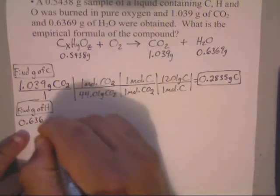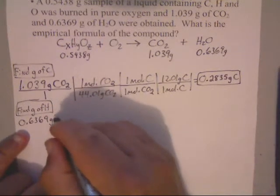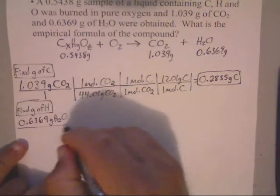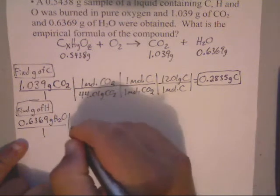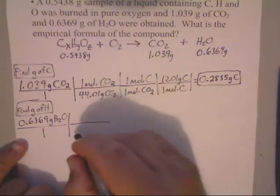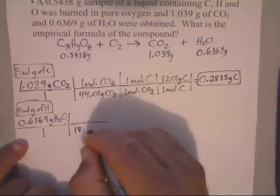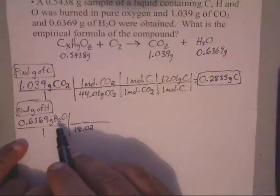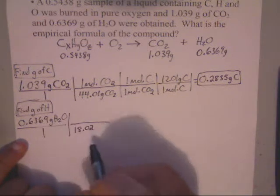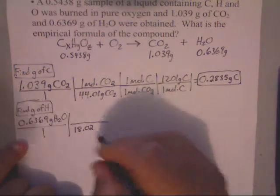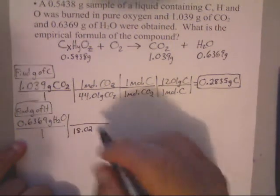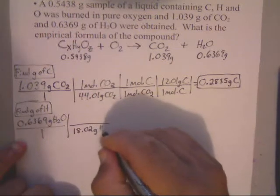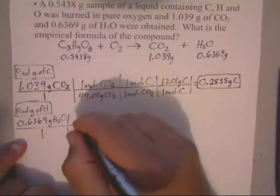Well, I know that the molar mass of water is 18.02 because that's 1.0, 1.0, and 16 add up to 18.02 for the molar mass. So that's going to be grams of H2O. And I know that that's molar mass of that. So that's 1 mole of H2O.